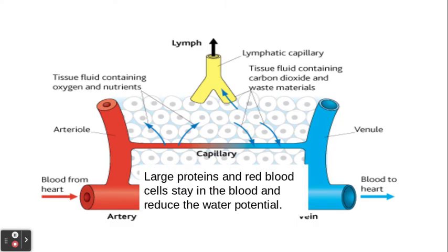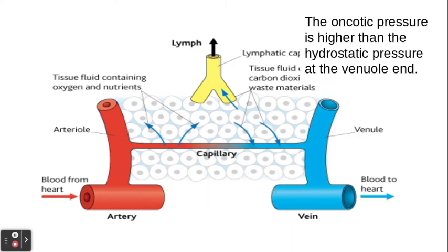Large proteins and red blood cells stay within the capillary, and what they do is reduce the water potential inside the capillary. As a result of this reduced water potential, water and other substances such as carbon dioxide and waste products will enter back into the bloodstream at the venule end of the capillary, because the oncotic pressure here is higher than the hydrostatic pressure. About 90% of the fluid returns back into the capillary through this process.